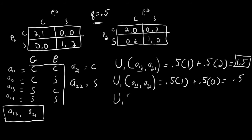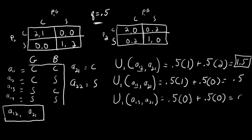How about when Player 1 plays A1-3 against A2-1? A1-3 says when Player 1 is the good type and prefers to match, he goes to the sporting event, but when he's the bad type, he goes to the concert. Half of the time he'll go to the sporting event when he wants to match, but because Player 2 is always going to the concert, he earns 0. The other half, when he wants to mismatch, he goes to the concert, but since Player 2 is always at the concert, he also earns 0. Player 1 earns an expected utility of 0 and never receives a positive payoff.